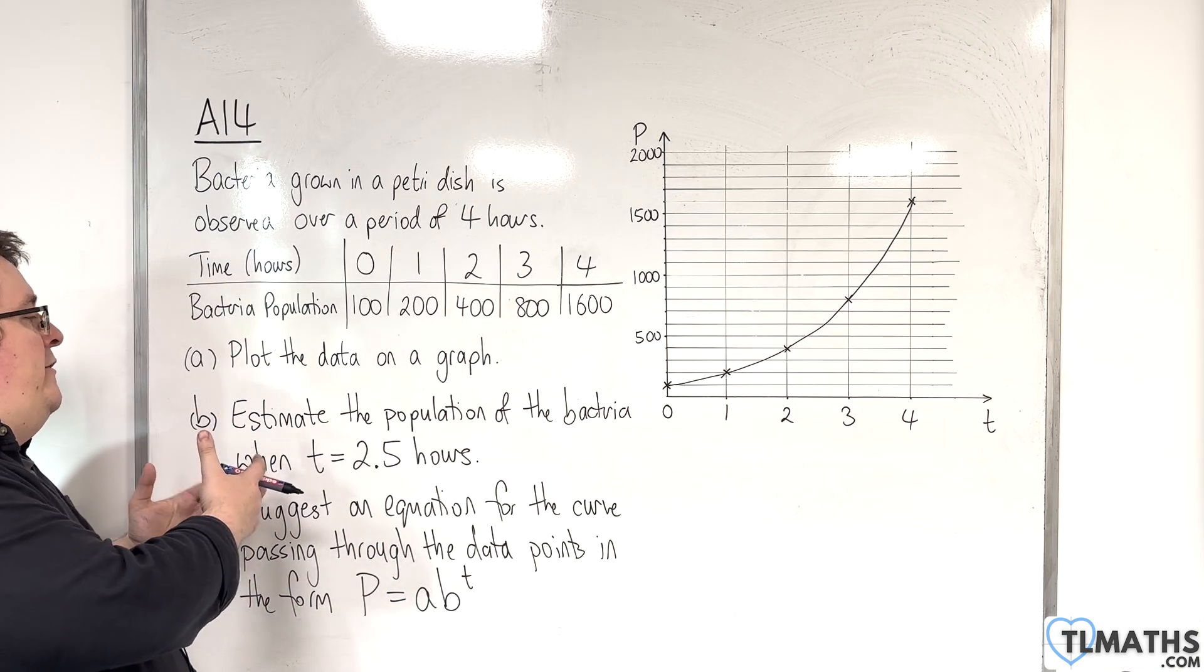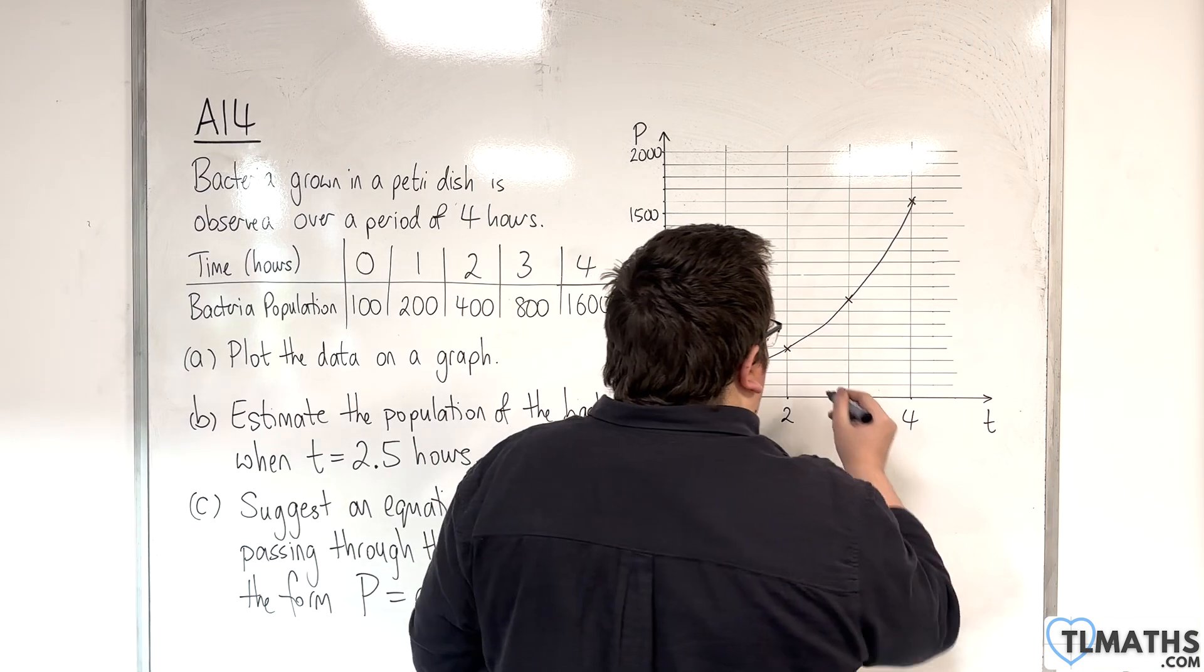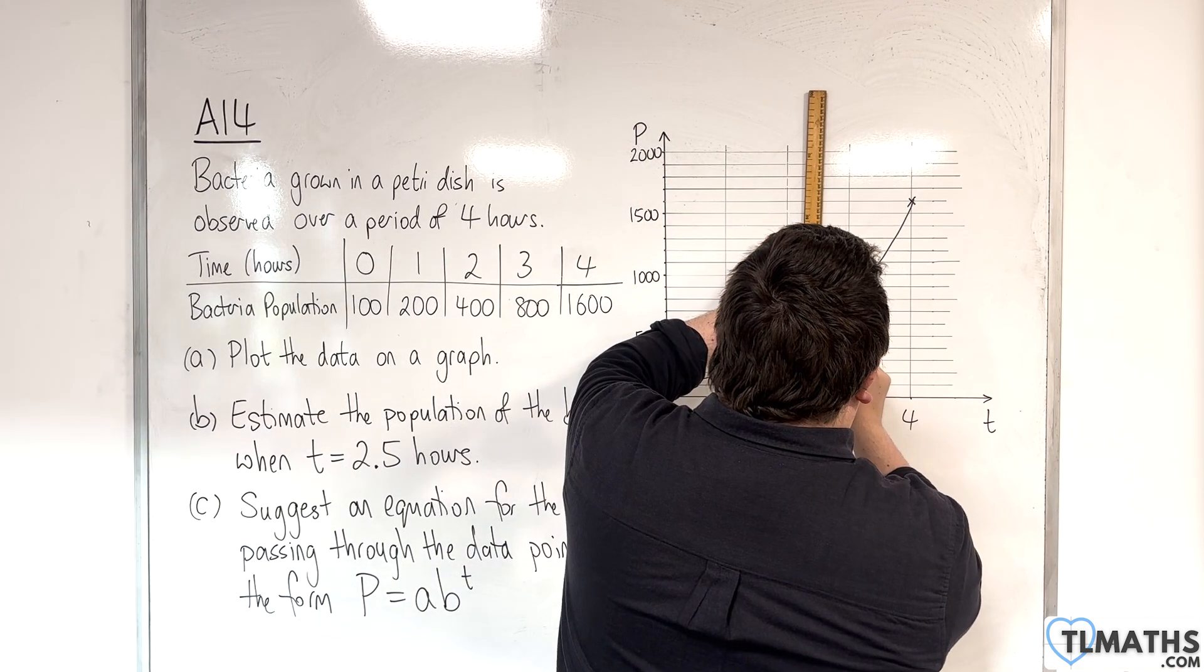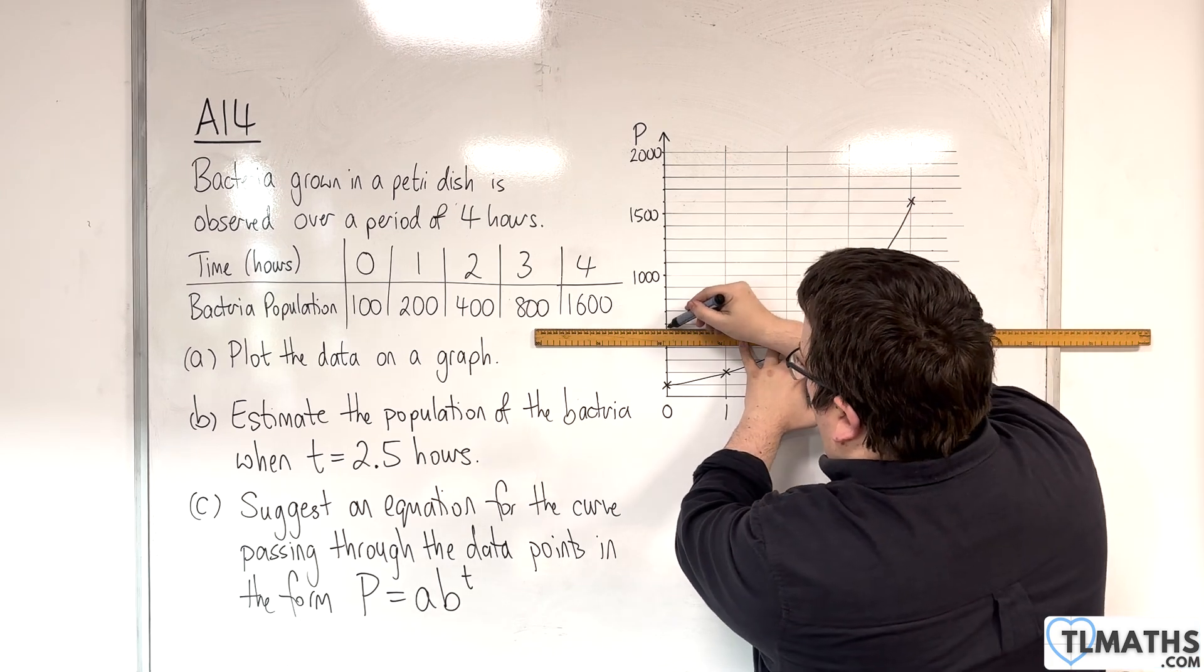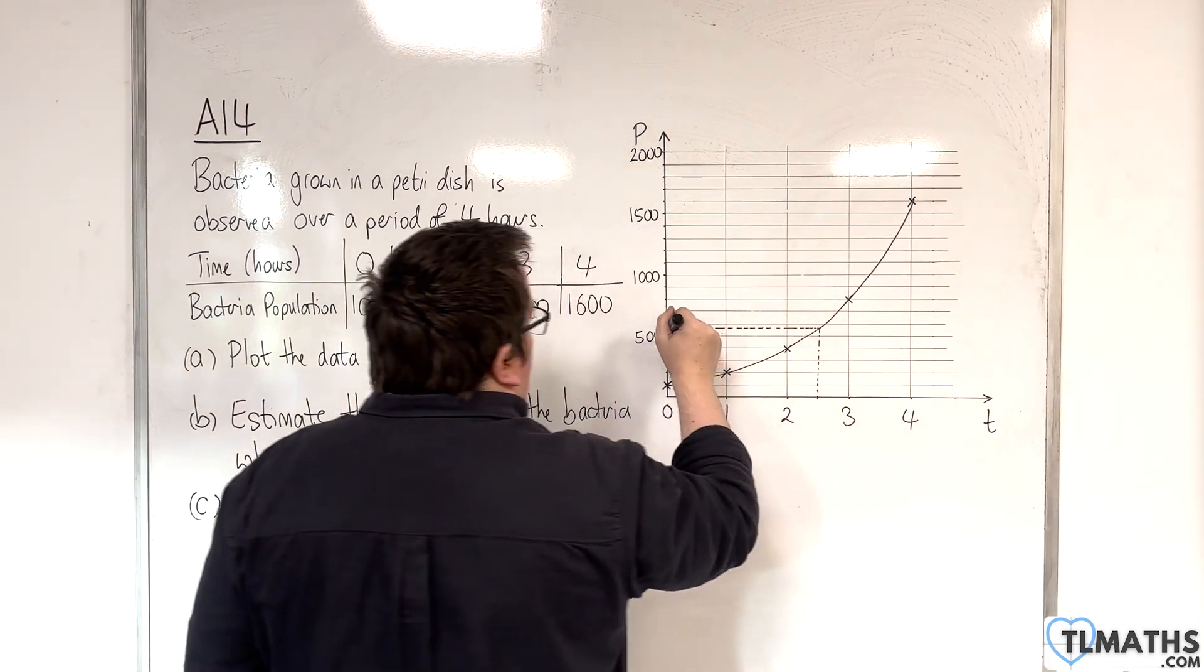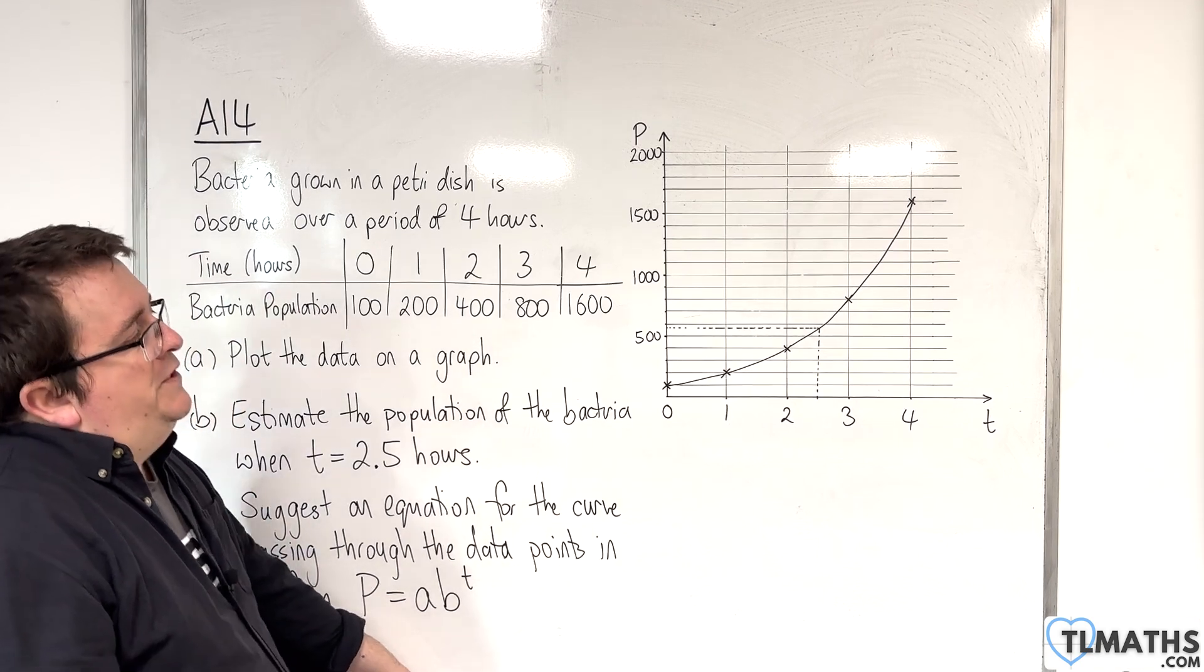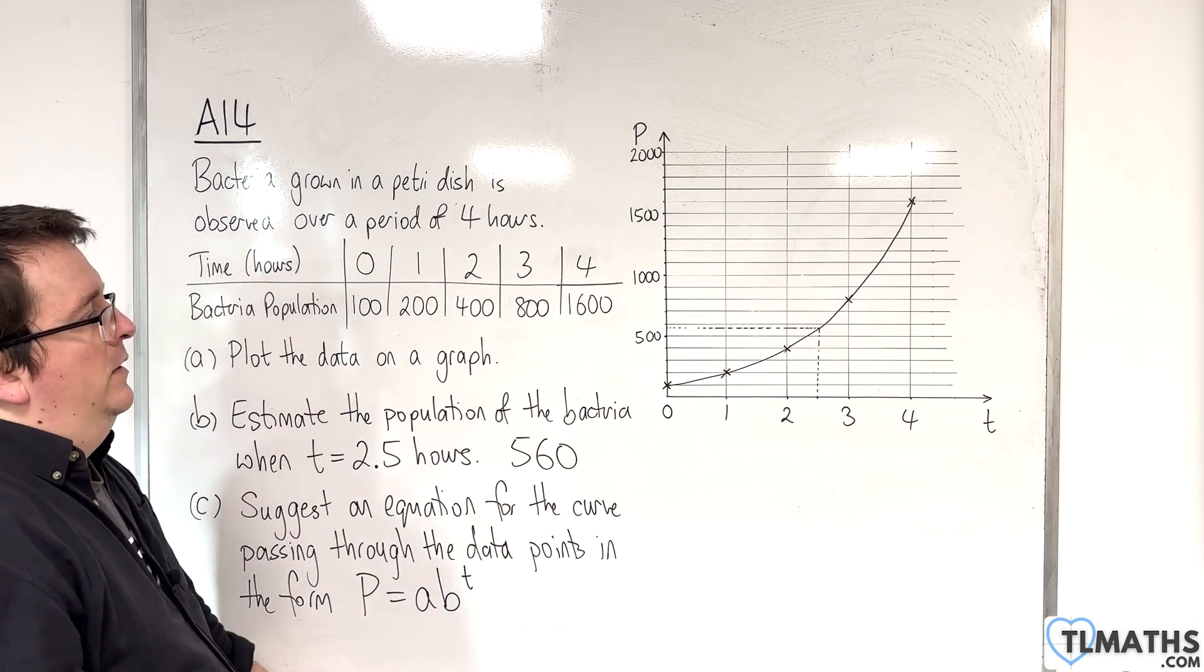What it's asking me to do here is estimate the population of the bacteria when T is 2.5 hours. I need to go from 2.5, so roughly there, I need to go up to my curve, and then along here. It's somewhere between 500 and 600. It's closer to 600 than 500, so it's probably something around about 560, 570, something like that. I'll go with 560, just to kind of see how close we're going to be.